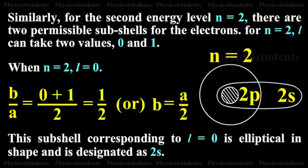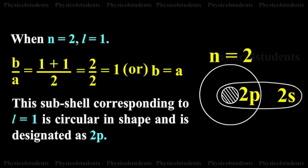For the second energy level, n=2, there are two permissible subshells for the electrons. For n=2, l can take two values: 0 and 1. When n=2 and l=0, b/a = (0+1)/2 = 1/2, or b = a/2. This subshell corresponding to l=0 is elliptical in shape and is designated as 2s. When n=2 and l=1, b/a = (1+1)/2 = 2/2 = 1, or b = a. This subshell corresponding to l=1 is circular in shape and is designated as 2p.